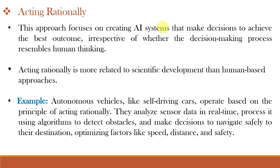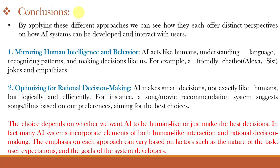The last approach is acting rationally or logically. This approach focuses on creating AI systems that make decisions logically to achieve the best outcome, and it may not follow the human decision-making process. It is more related to scientific development than human-based approaches. For example, autonomous vehicles like self-driving cars operate on the principle of acting rationally. If the road is empty, a human might increase speed beyond the limit, while a self-driving car takes decisions rationally based on different sensors to navigate safely to the destination. So the question is: which approach is best — thinking humanly, acting humanly, thinking rationally, or acting rationally?